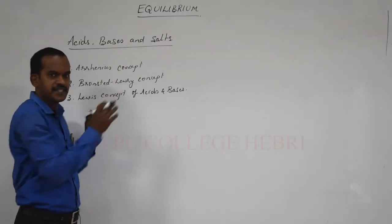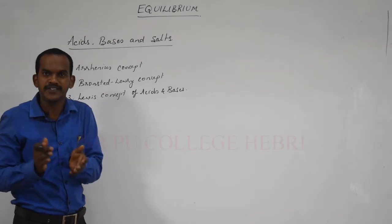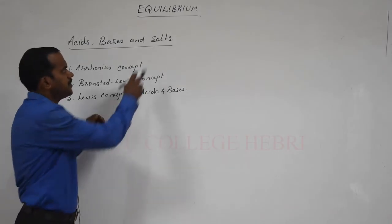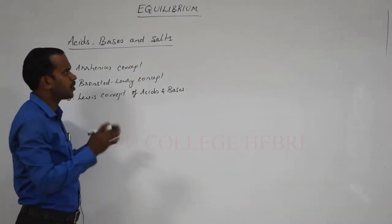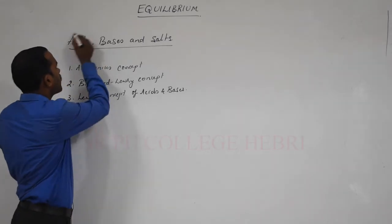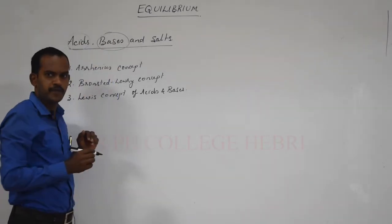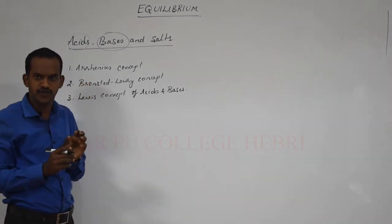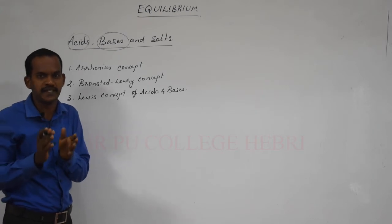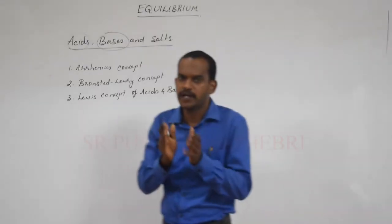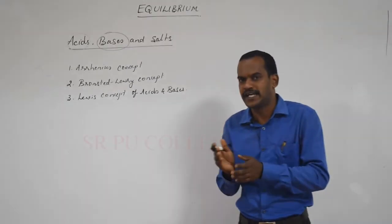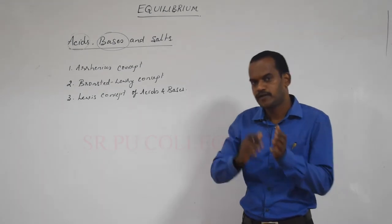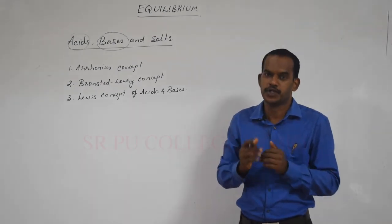In acids and bases, we are discussing the different theories and concepts which explain what is an acid, when it acts as a base, and all those details. In salts, we will study about the hydrolysis. In today's class, let me discuss more about acids and bases. There are three important concepts which explain about acid and base. You all know the fundamentals of acids — it may be based on taste, the change in color of litmus paper, and based on pH.